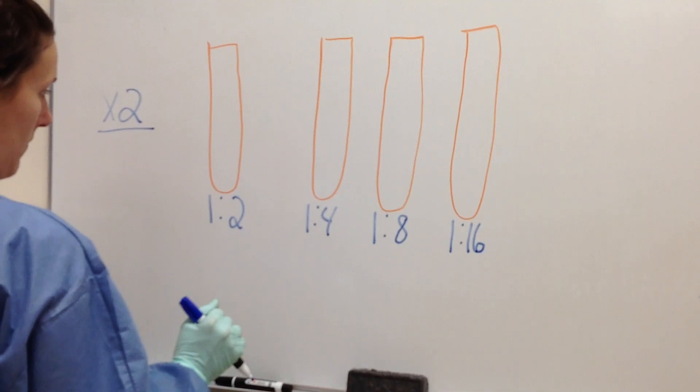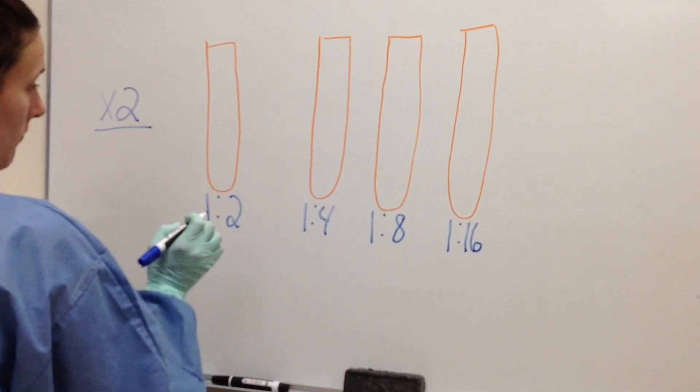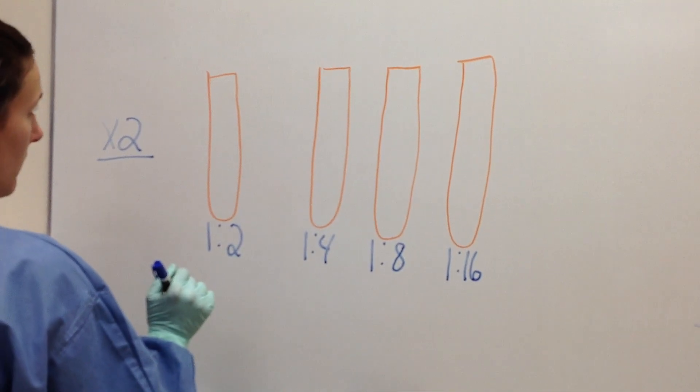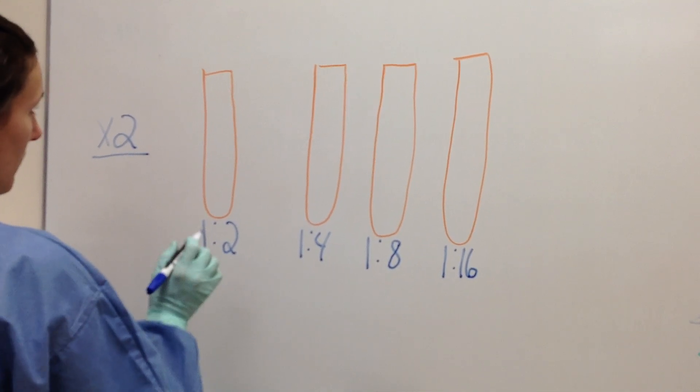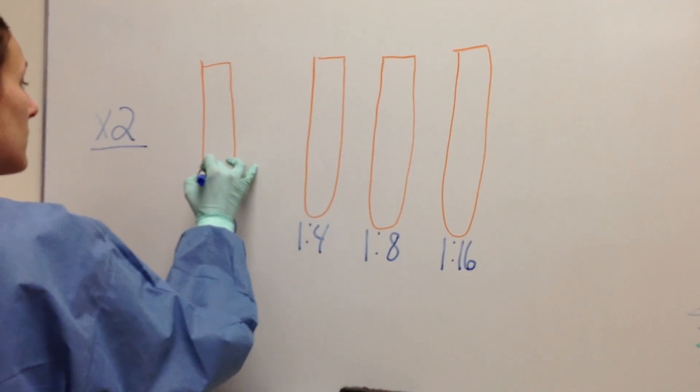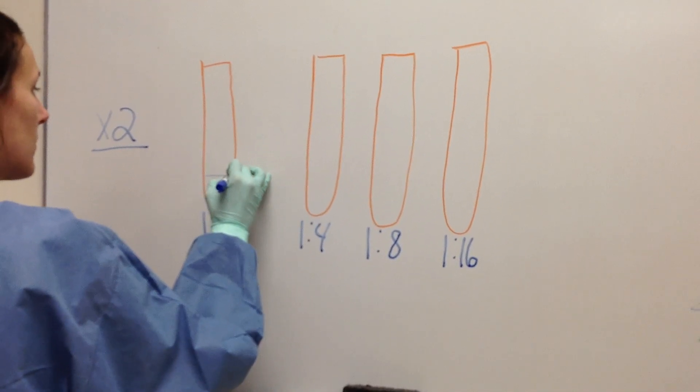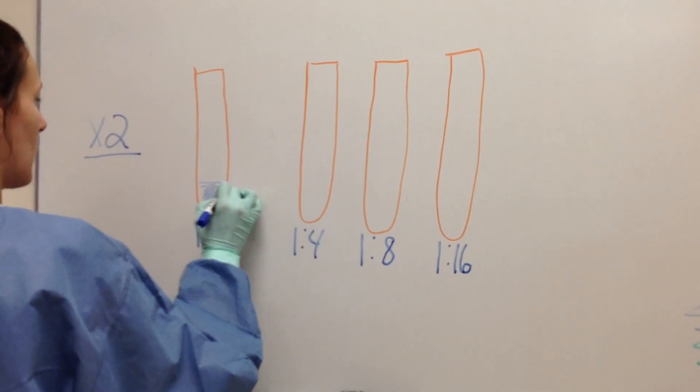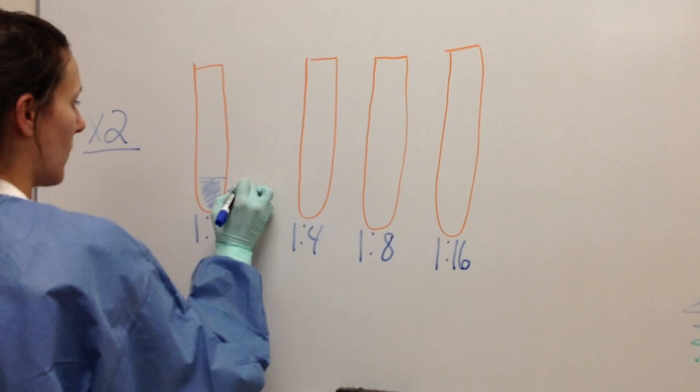So we are increasing our dilution as we go. Our sample is getting less in each one. So first we're going to add our appropriate amount of diluent in all tubes. In this case we're going to use water. And 500 ml of water will be dispensed into all 4 tubes.